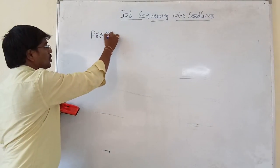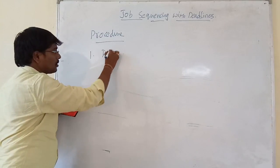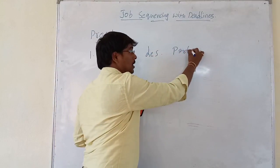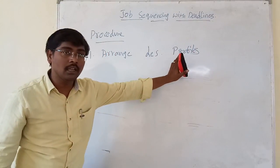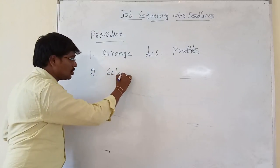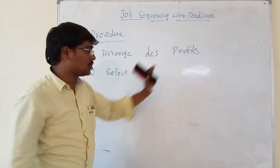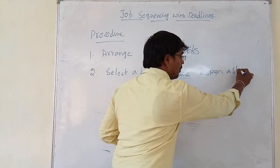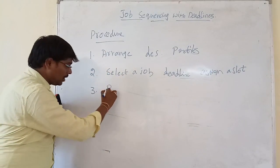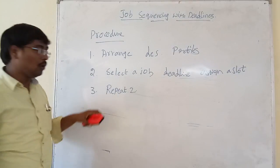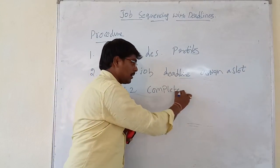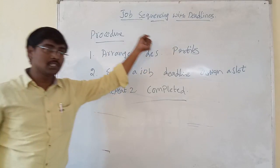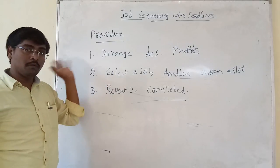The procedure for executing the jobs is: first, arrange all the jobs in descending order of their profits. Second, select a job and execute the job within their deadline, meaning assign a slot for executing. Third, repeat step 2 until all jobs are completed.